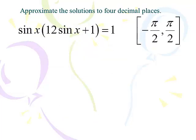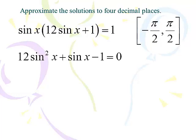Next: sinx times the quantity (12sinx + 1) equals 1. The interval is again negative π/2 to π/2. Don't set sinx equal to 1 and 12sinx + 1 equal to 1 — you can only do that if the right side equals 0. We're going to distribute the sinx and move the 1 to the other side: 12sin²x + sinx minus 1 equals 0.